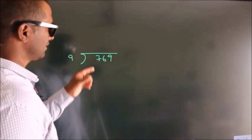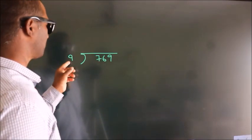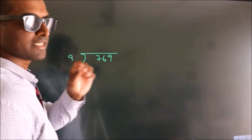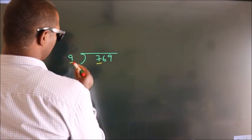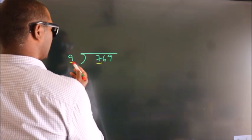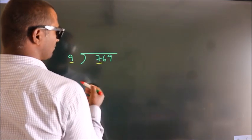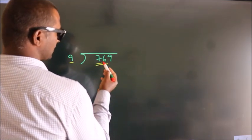How to divide 769 by 9? See, here we have 7, here 9. 7 is smaller than 9, so we should take 2 numbers: 76.